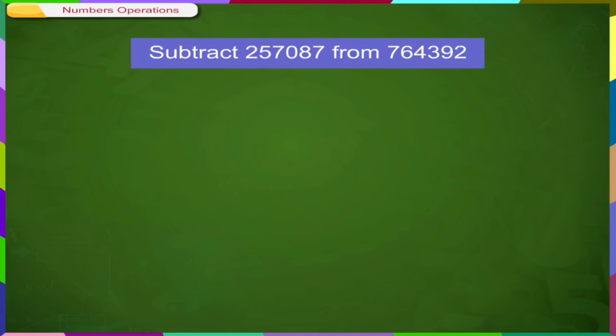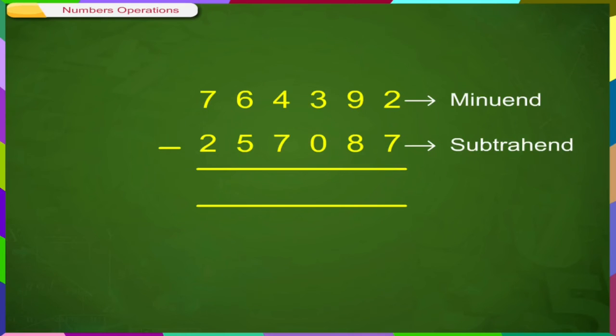the next example. Subtract 257,087 from 764,392. Again, arrange in columns,